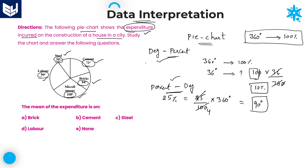Especially while solving problems related to pie chart diagrams, you must know these two points: degrees to percentage and percentage to degrees. We don't know when they will give degrees and when they will give percentage, so you must know both conversions. Once you know this, it is very easy to get the answers — pie chart questions are easier compared to other diagram types.